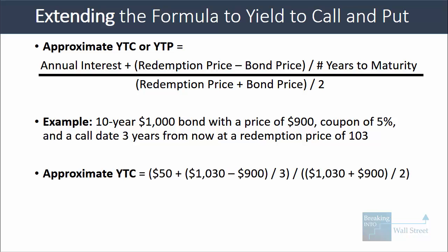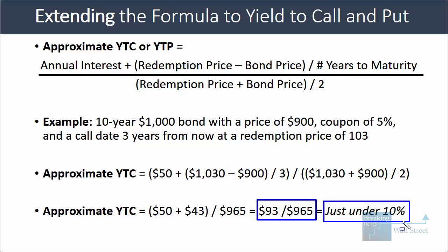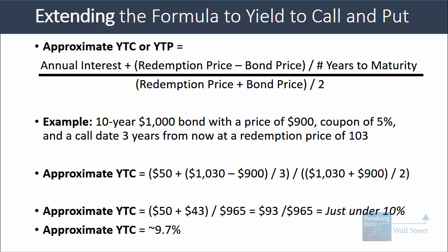...here's how the math works. Annual interest coupon is $50. Redemption value $1,030 minus bond price $900 is $130; divided by 3 years is about $43. The average between $1,030 and $900 is $965. So the formula gives us 50 plus just over 40, which is about 93, divided by 965. Since 93 divided by 930 is exactly 10%, and the denominator is larger at 965, the result is just under 10% — it comes out to about 9.7%.